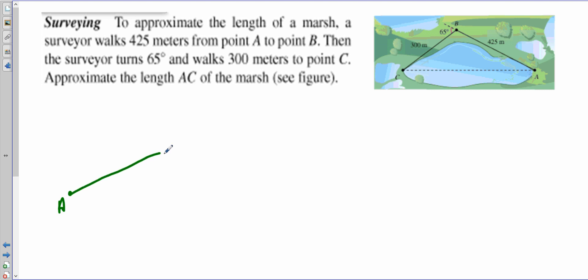You have 425 meters from A to B, and then the surveyor turns 65 degrees. So what does that mean? Well, if you turn 65 degrees...